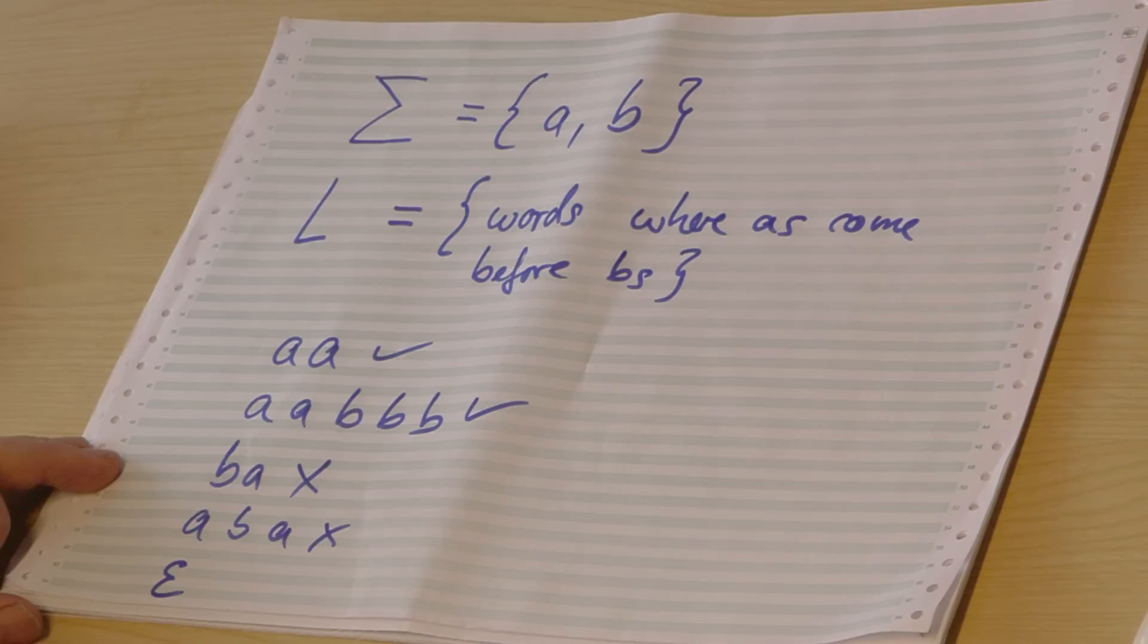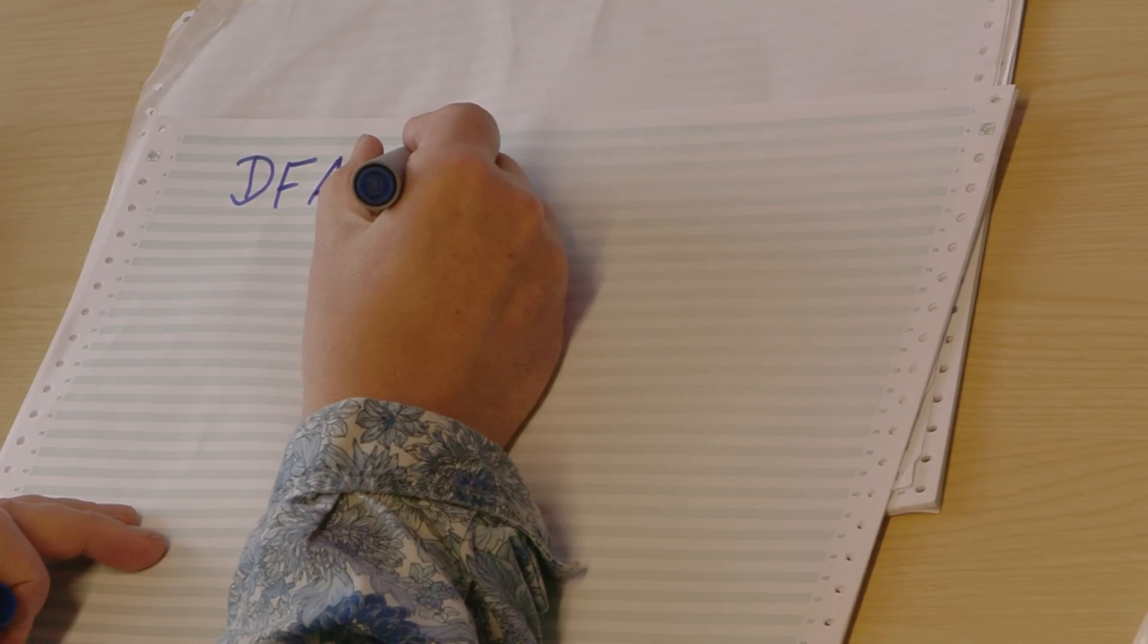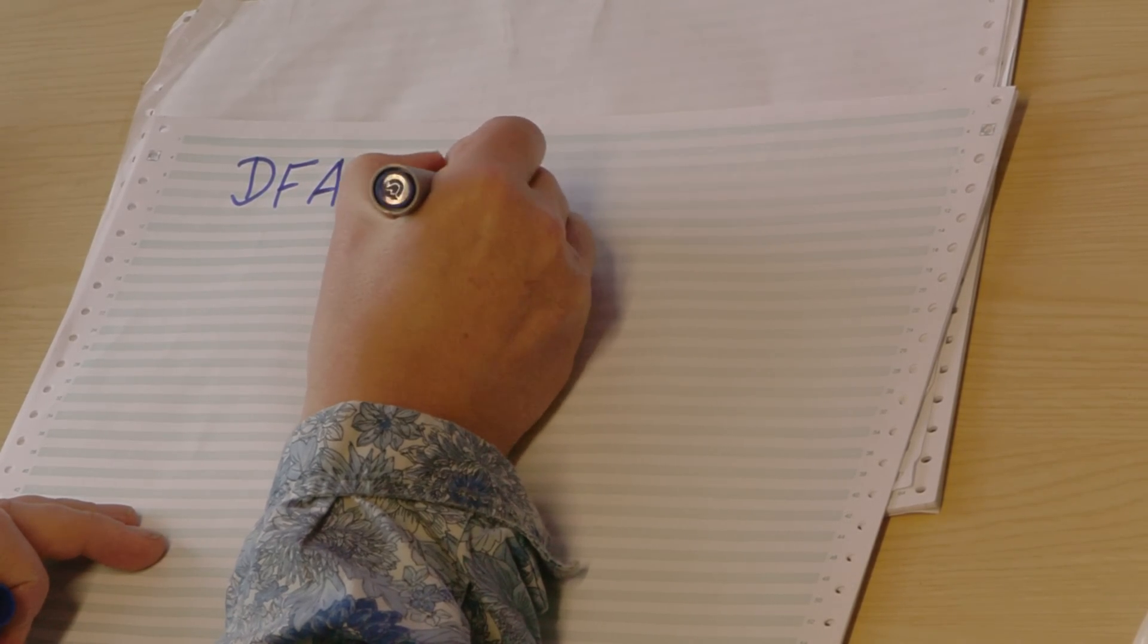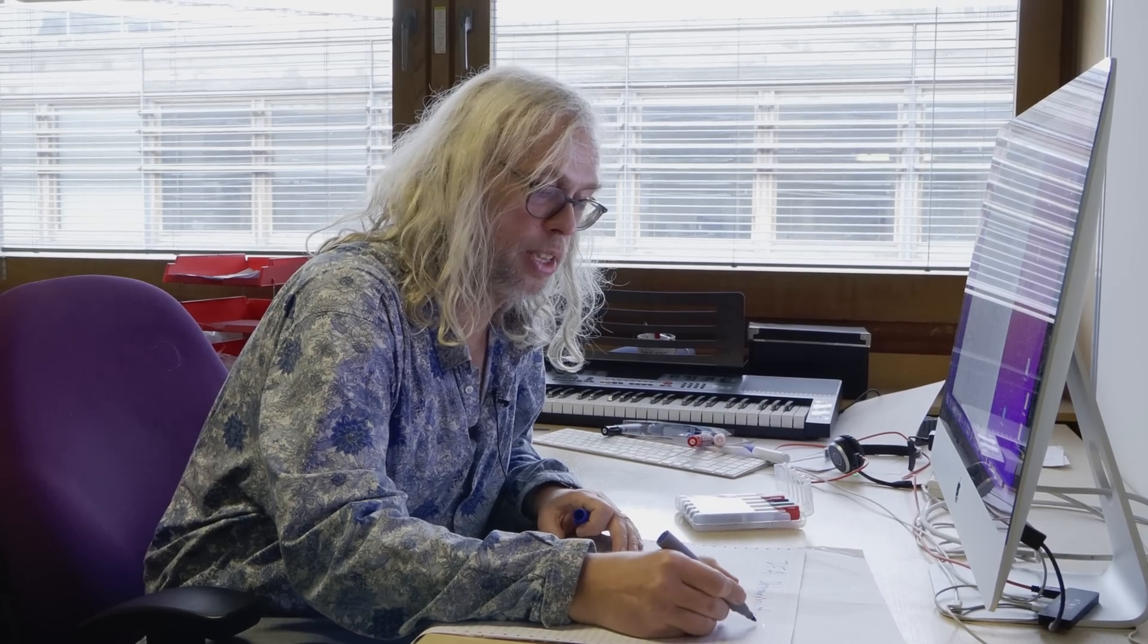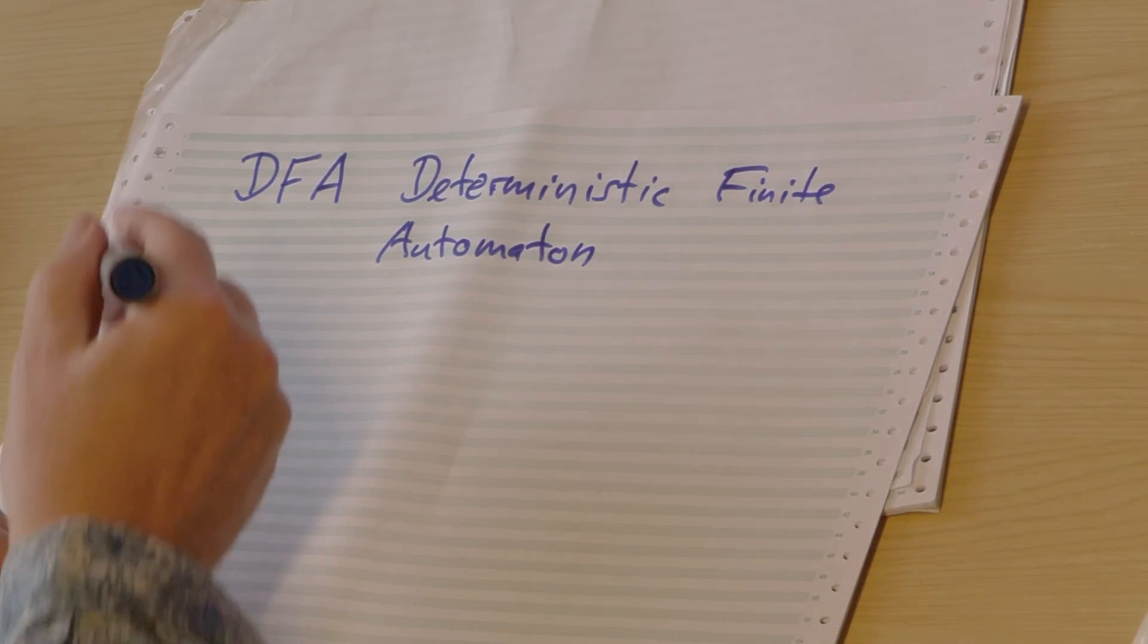So let's now build an automaton. I'm talking today about DFA, which is short for deterministic finite automaton. We will see other types of automaton - for example, the NFA is the non-deterministic one. And we'll also see regular expressions, which are related to the same class of languages, which are called the regular languages. But today we look at the simplest case of an automaton, a DFA.